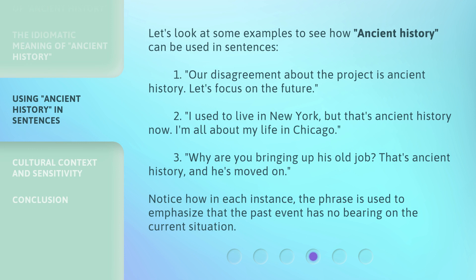Let's look at some examples to see how Ancient History can be used in sentences. One: 'Our disagreement about the project is Ancient History. Let's focus on the future.' Two: 'I used to live in New York, but that's Ancient History now — I'm all about my life in Chicago.' Three: 'Why are you bringing up his old job? That's Ancient History, and he's moved on.' Notice how in each instance, the phrase is used to emphasize that the past event has no bearing on the current situation.